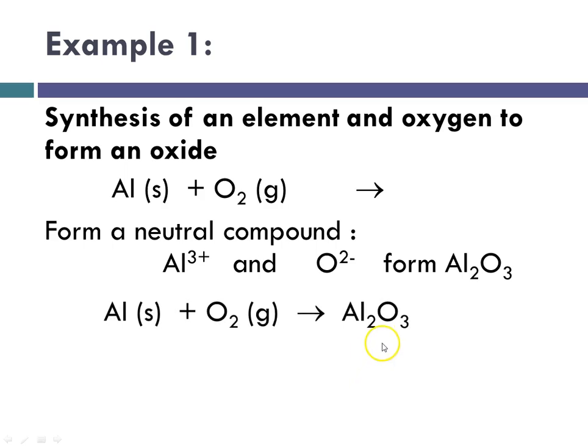So again, here would be our product, and then the only thing we would have to do is balance it. You can see there are two aluminums on this side, or two on this side, and only one on this side, and three oxygens on this side, and only two on that side. So we're going to have to balance.